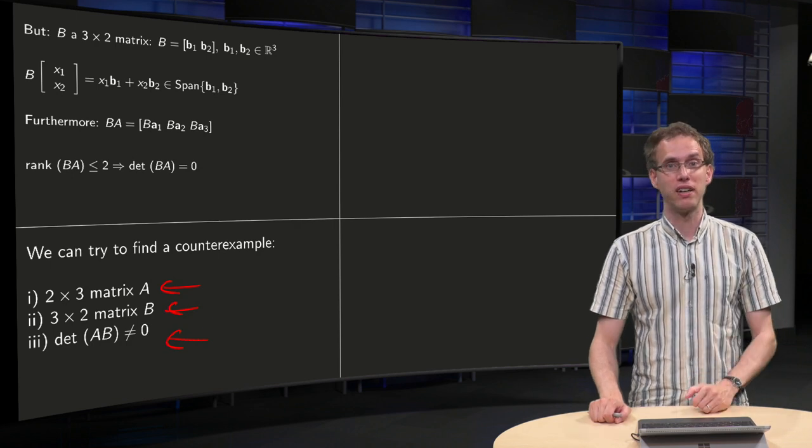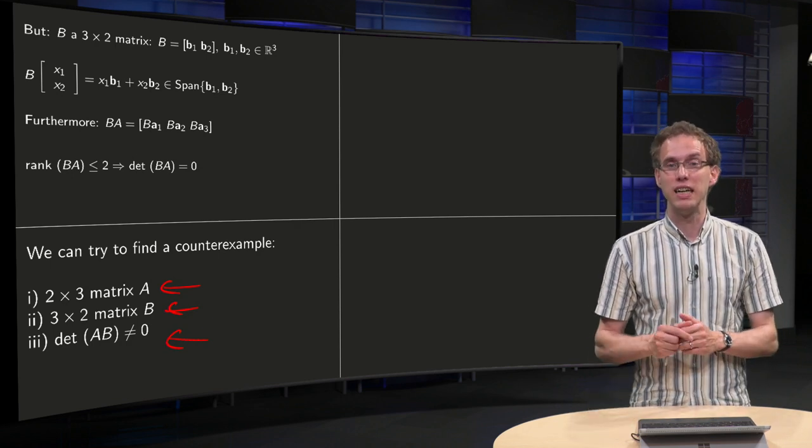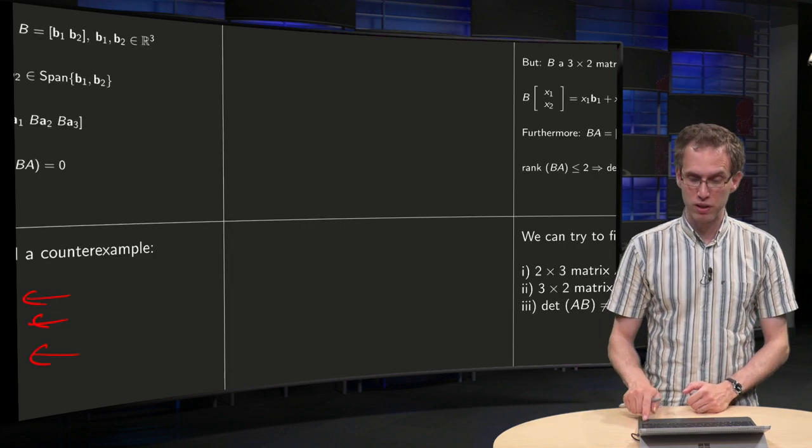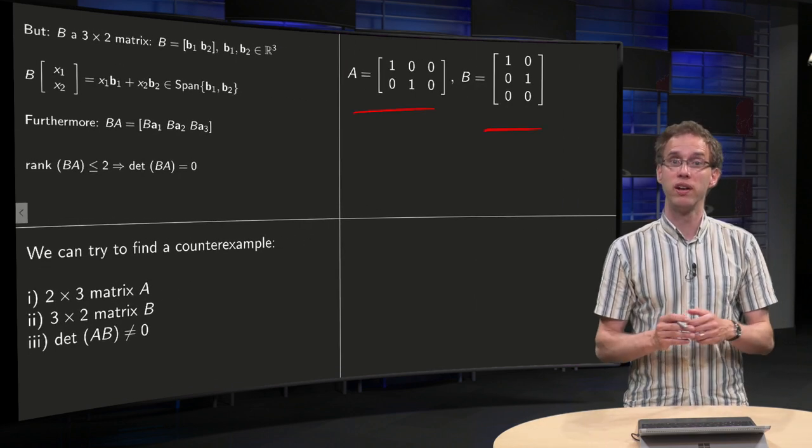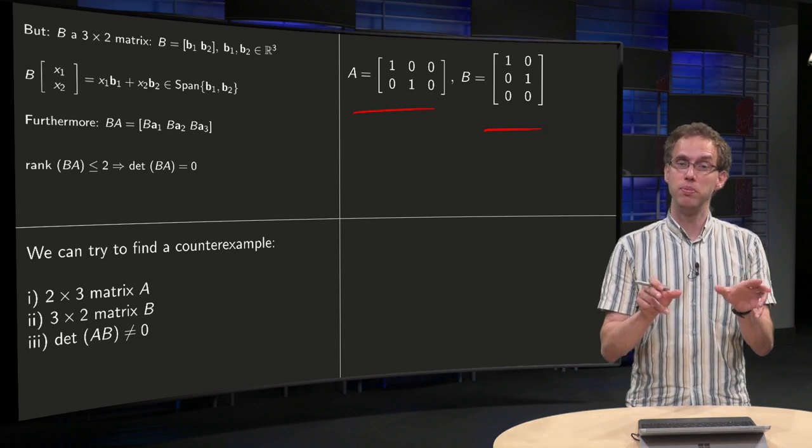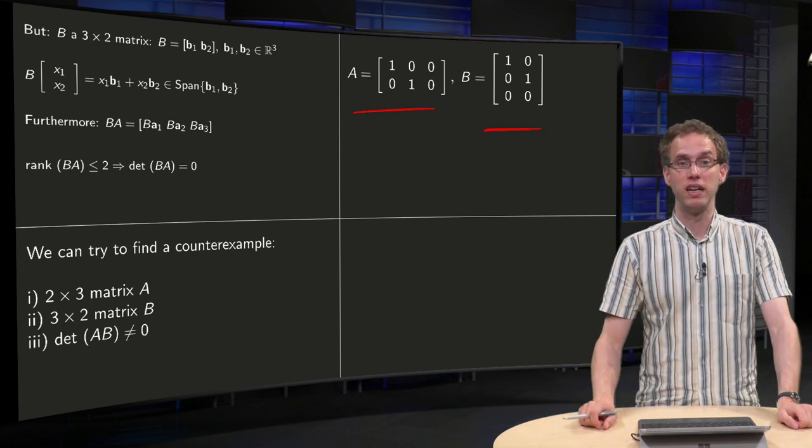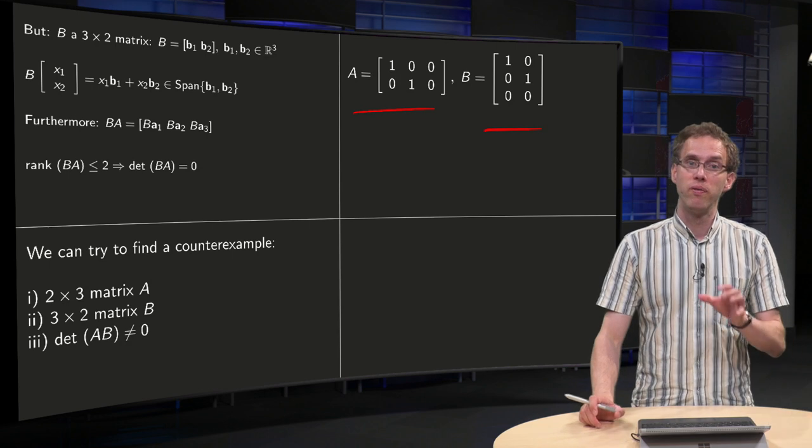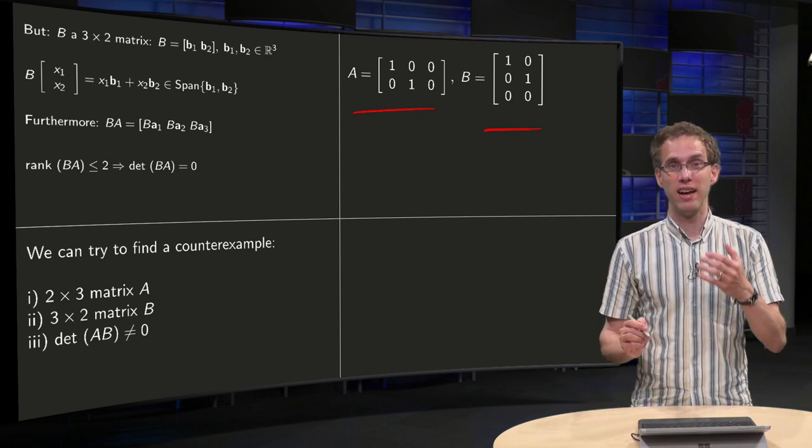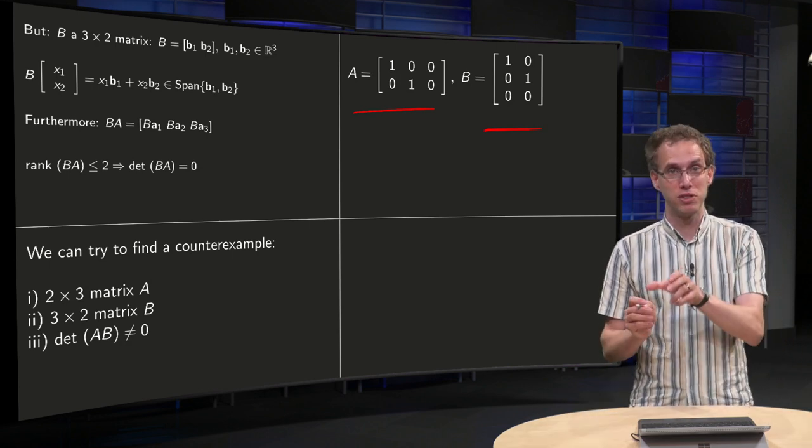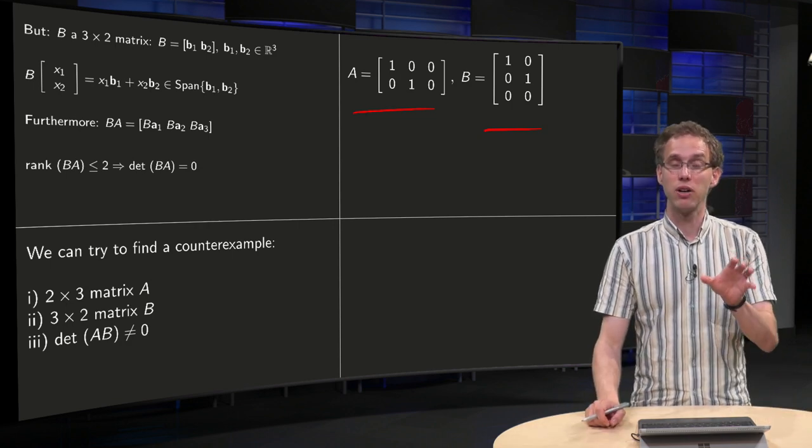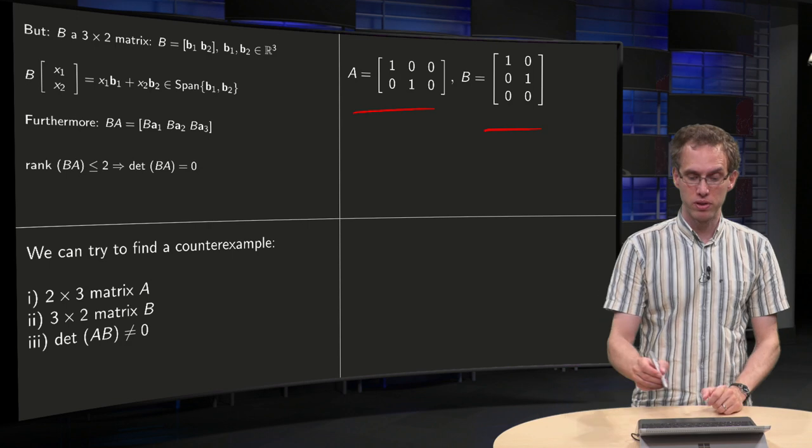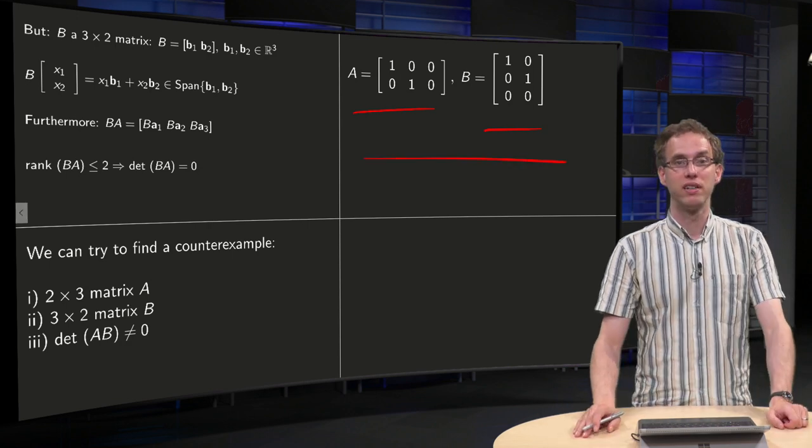Let's always try to find a counterexample which is as easy as possible. So for example, this example with this A and this B over here would already work. The determinant of A times B equals 1 and the determinant of B times A equals zero. So here you see that this statement that det(AB) equals det(BA) for general m×n matrices is in general not true, because here we have a counterexample.